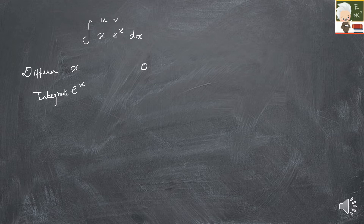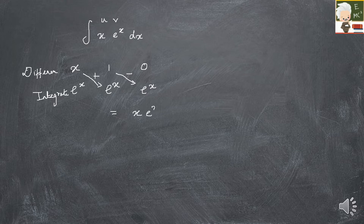Differentiating again gives 0. For eˣ, integrating gives eˣ — it stays the same each time. Now cross the terms diagonally and apply alternating plus and minus signs. The final answer is x·eˣ minus eˣ.